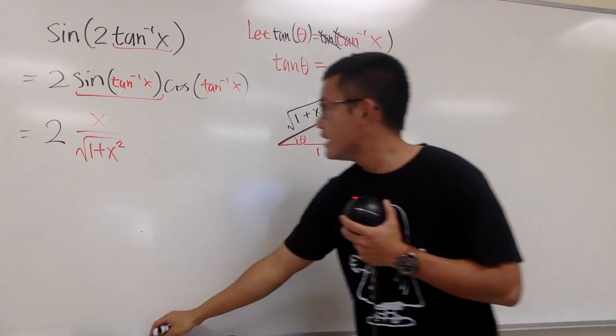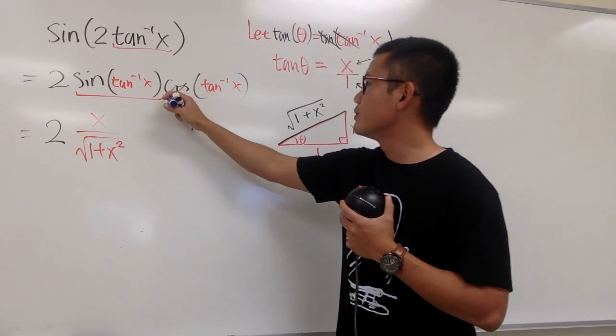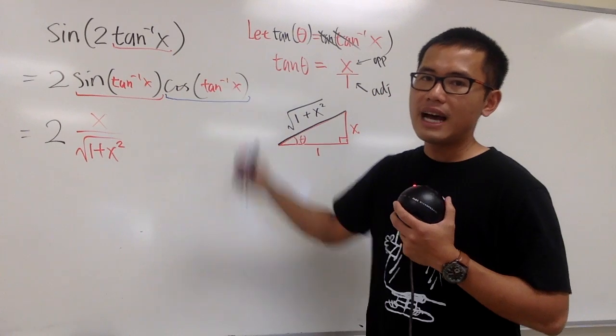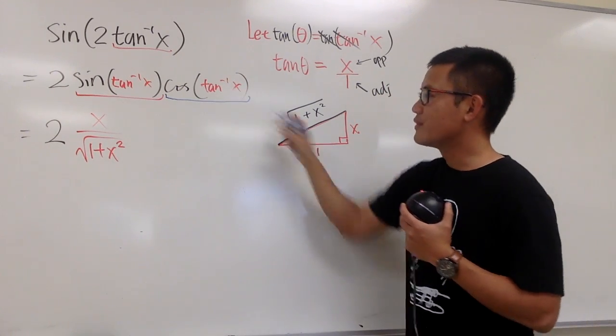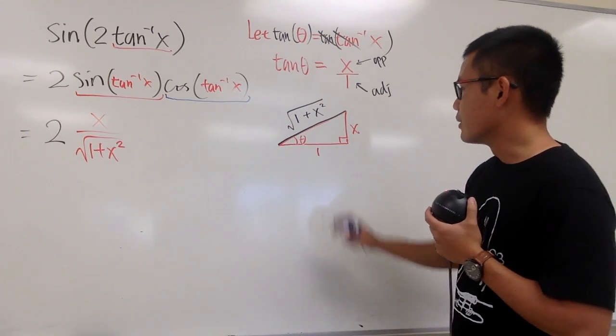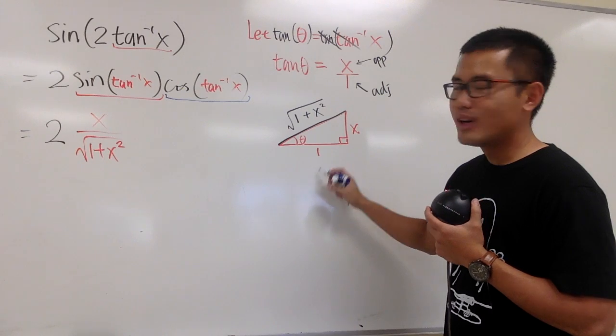Let's look at cosine, which is this right here. Cos(θ)—theta is the inverse tangent x. Cosine is the adjacent over hypotenuse.